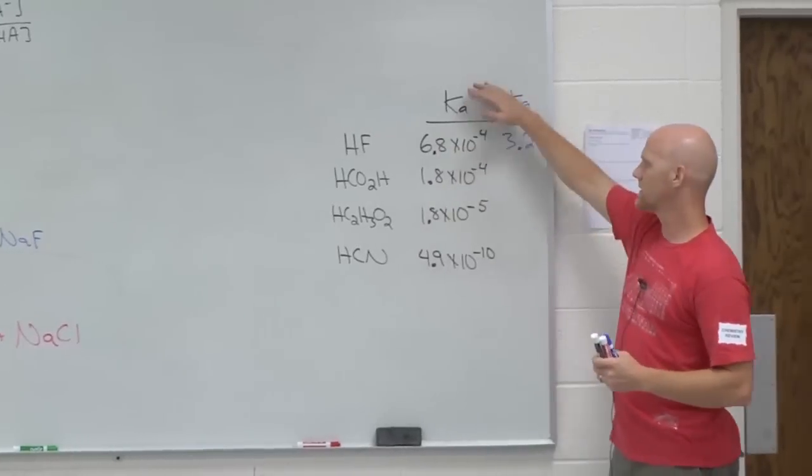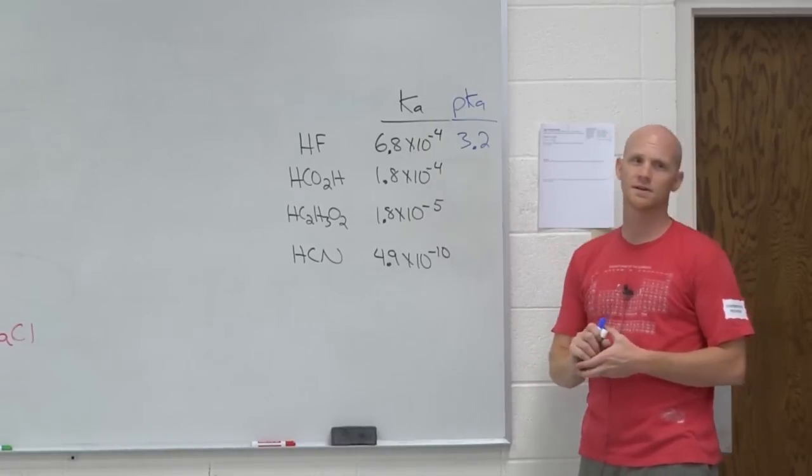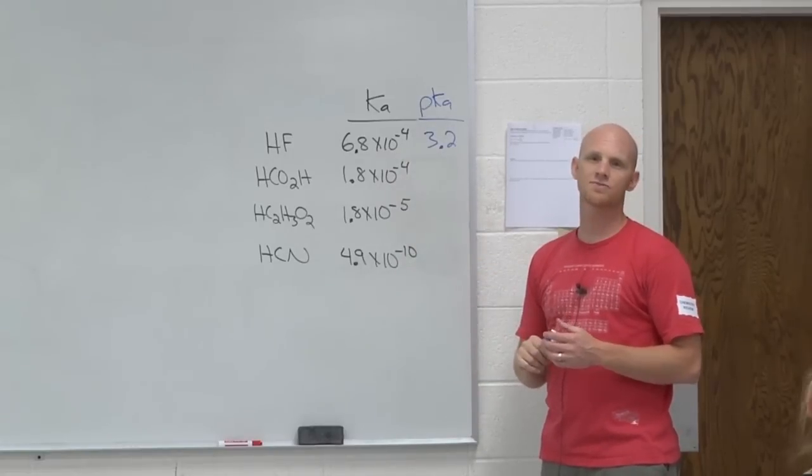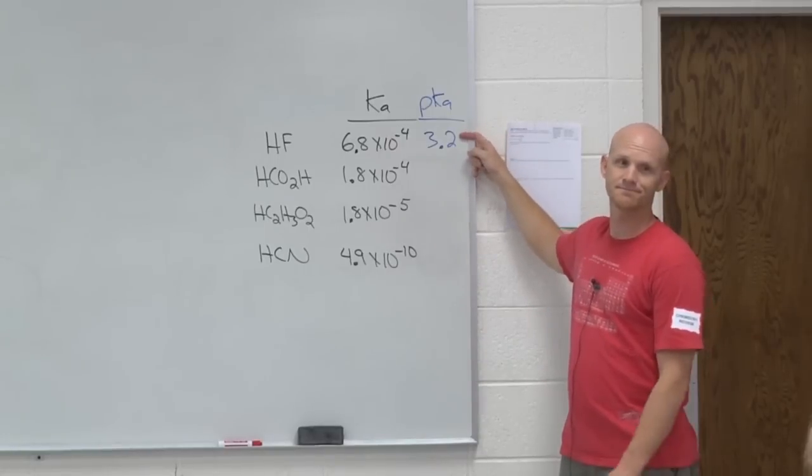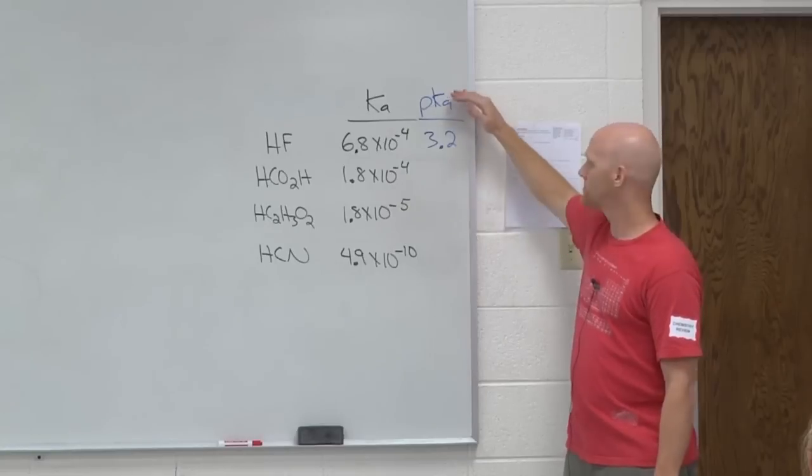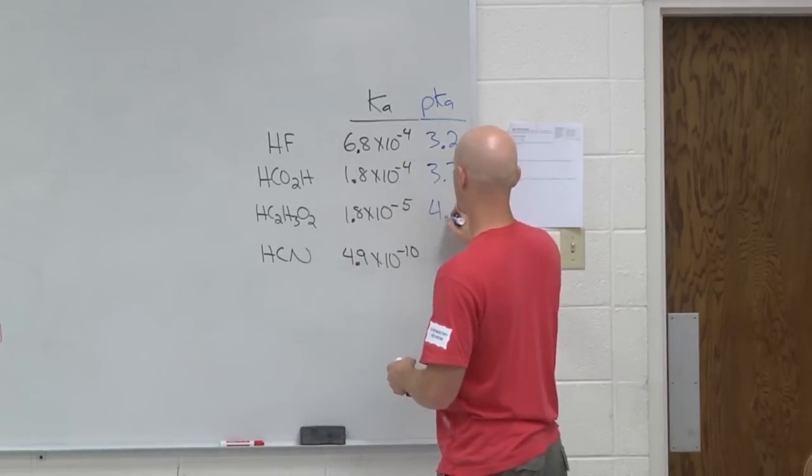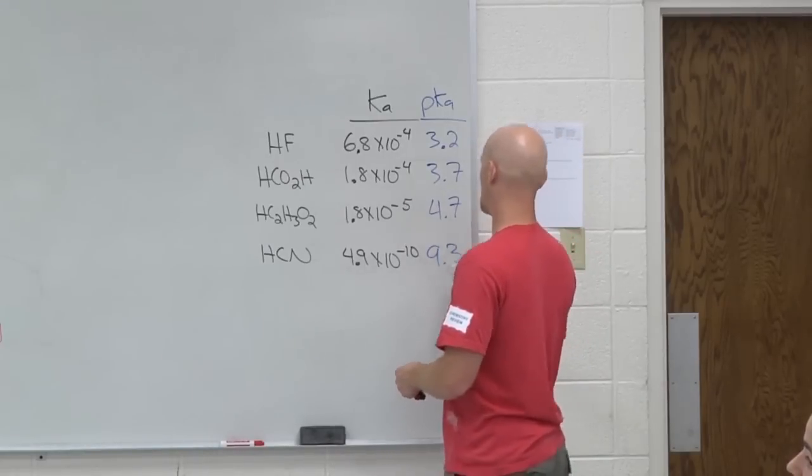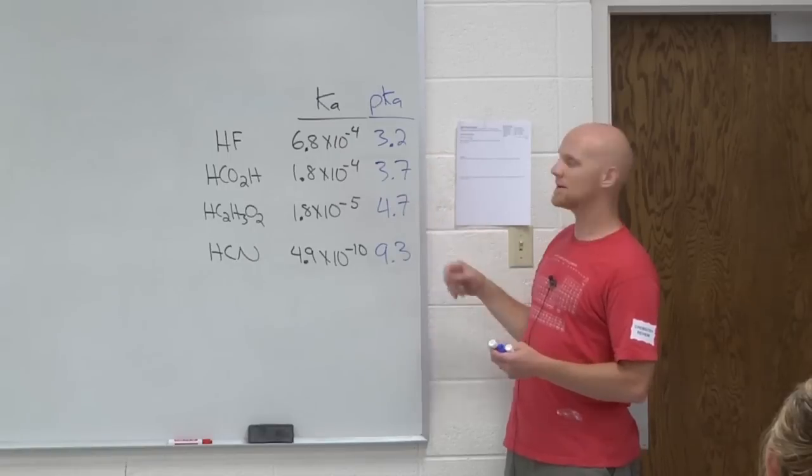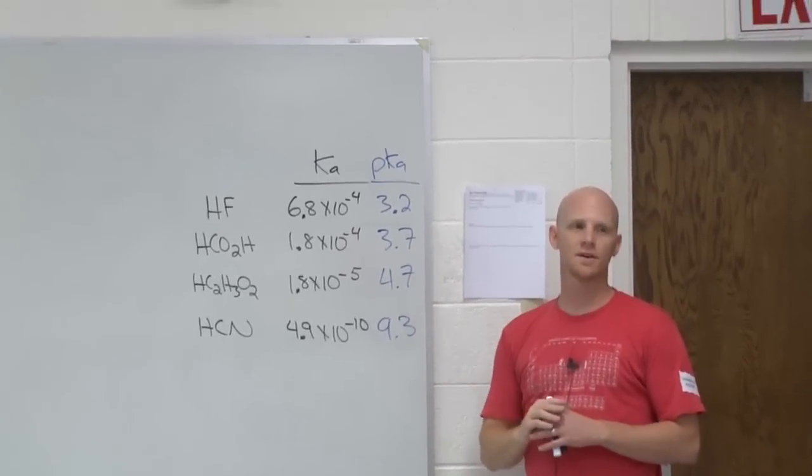So my question here is if we look at these guys, and I say which of these could be used to prepare a buffer of pH 4.3? Could I use HF with his conjugate base? No, it's outside the buffer range. Notice, what do I need to do to solve this problem? Find all the pKa's. What's the pKa for this guy? 3.7. What about the next one? 4.7. The next one? 5.3. Which of these could be used to make a buffer of pH 4.3? Either one of these. Which one's better? A little bit closer on this one, but either one technically could be used to make it. Because they're within... The pKa is within one unit of the desired pH.